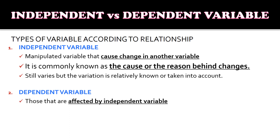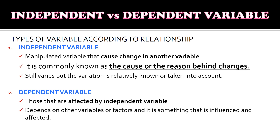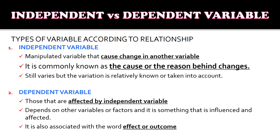For dependent variables, those are affected by the independent variable and depend on the other variables or factors. It is something that is influenced and affected. It is also associated with the word effect or outcome.